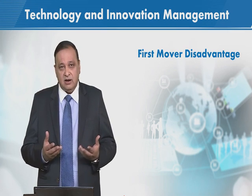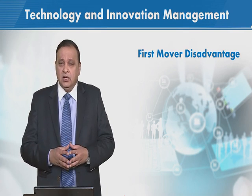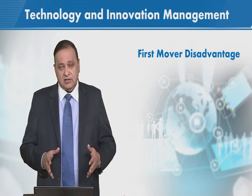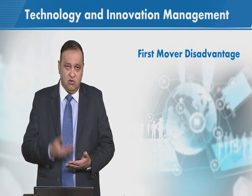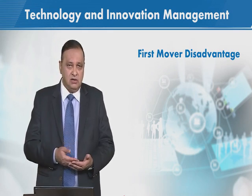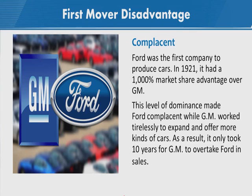To produce cars — in 1921, Ford had a 1,000 times market share advantage over General Motors. That is a 1,000 percent gap in the market — a huge gap.